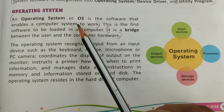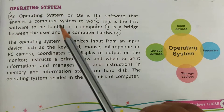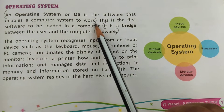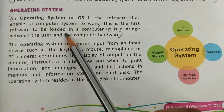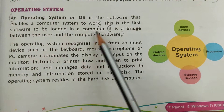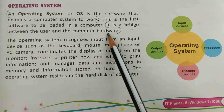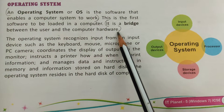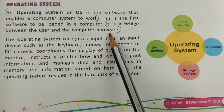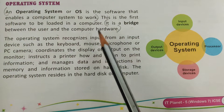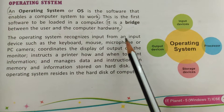The first category is operating system, which we also call OS in short. It is software that enables a computer system to work, and it is the first software to be loaded into a computer. It acts as a bridge between the user and the computer hardware.